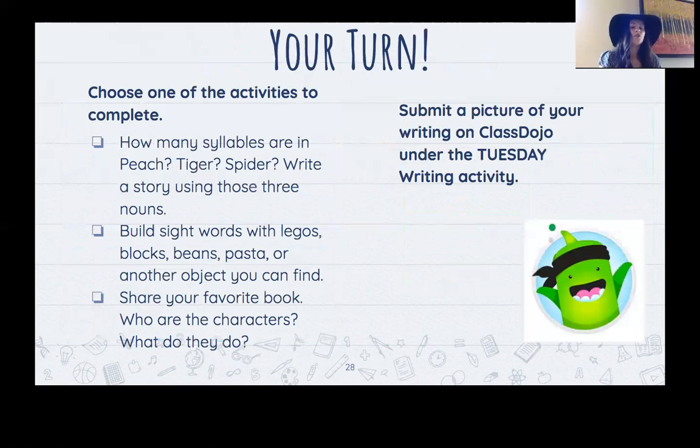Alright. Just to review, you have three activities you can choose from today. Make sure you submit one of the activities, just one, you don't have to submit all of them, to your class dojo under the Tuesday writing activity. The three activities are how many syllables are there, you can build sight words, or you can share your favorite book. Alright. Good luck and happy writing.